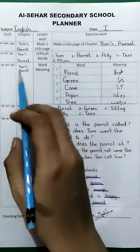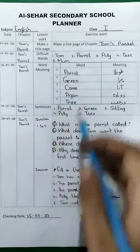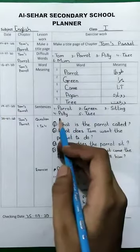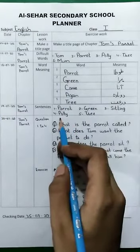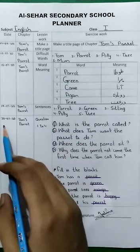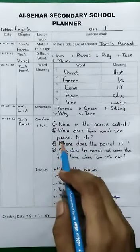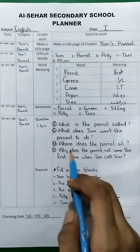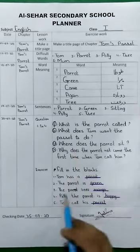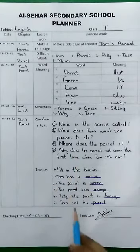18th of July: write word meanings on your copy. 19th of July: make a sentence with the help of these words. 20th of July: write question and answer on your copy — the question is here and the answer is in your vacation work file. Also write fill in the blanks on your copy.